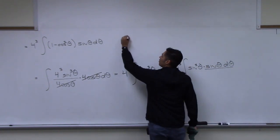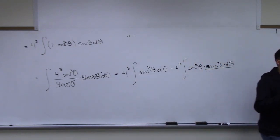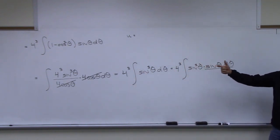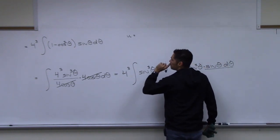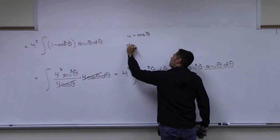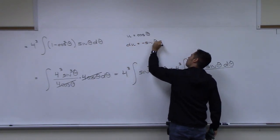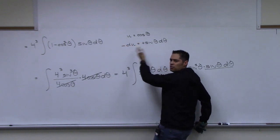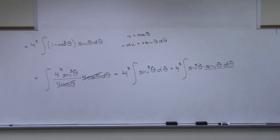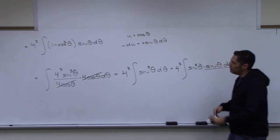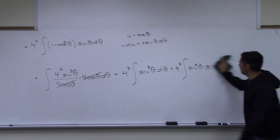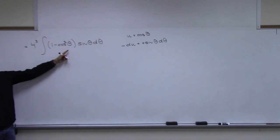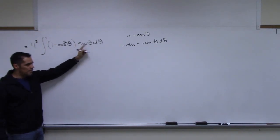So we now have 4³ times the integral of (1 − cos²θ) sin θ dθ. We make the substitution u = cos theta, du = −sin theta d theta. This is a second substitution — first we went from x to theta, now theta to u, which means we'll need to go all the way back to x at the end.